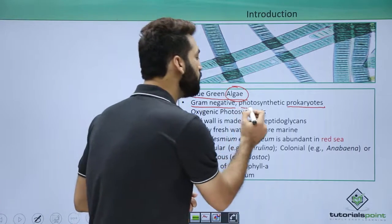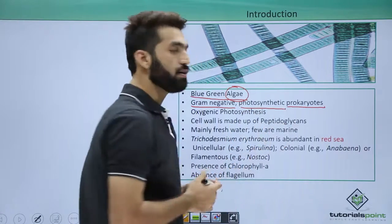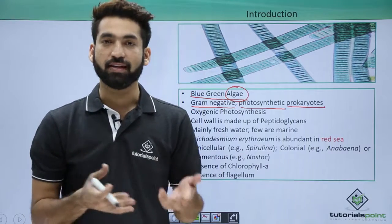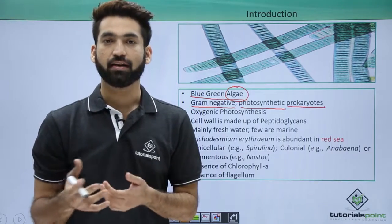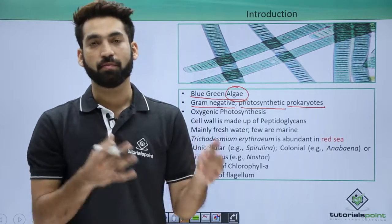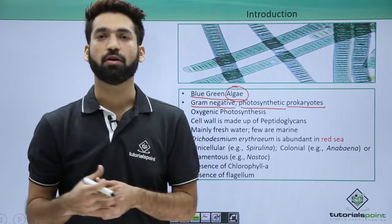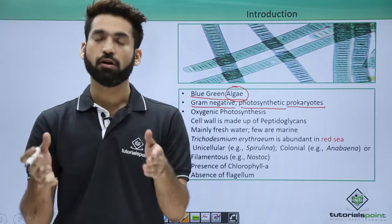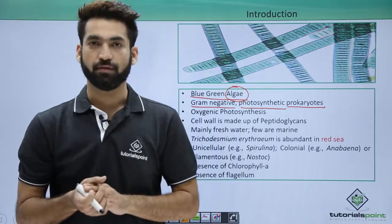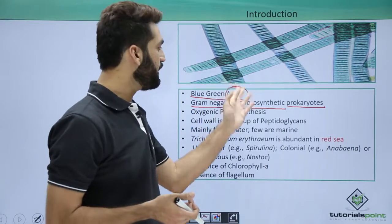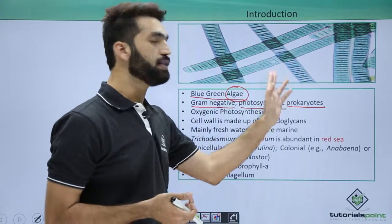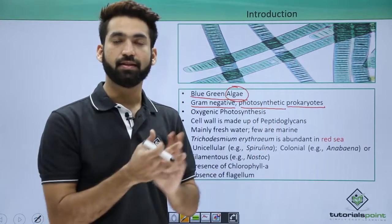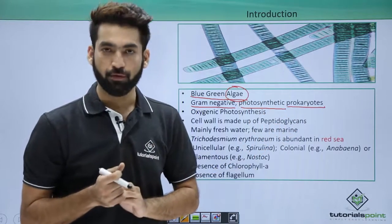Cyanobacteria are photosynthetic. Previously I told you about green sulfur bacteria, green non-sulfur, purple sulfur, and purple non-sulfur bacteria — they were phototrophic. Similarly, cyanobacteria are photosynthetic or phototrophic, meaning they can synthesize their own food.